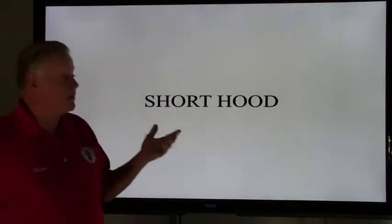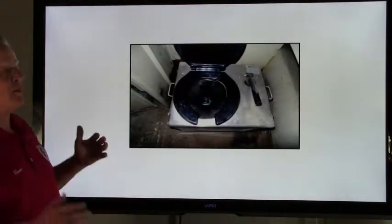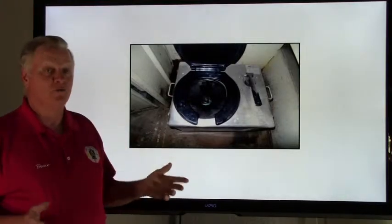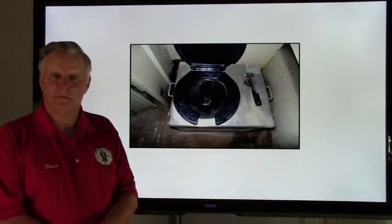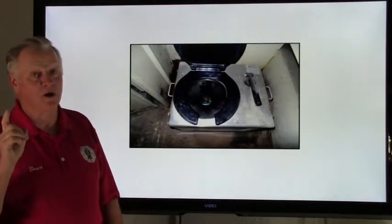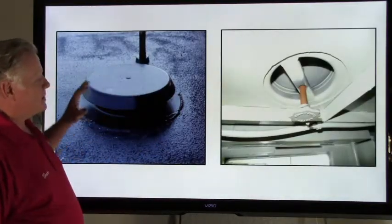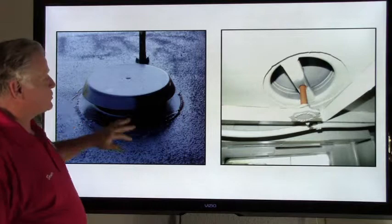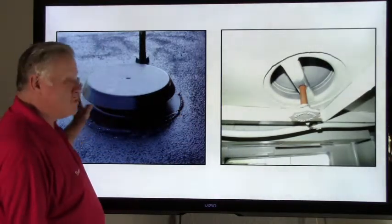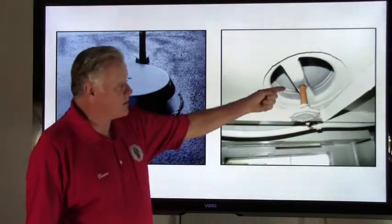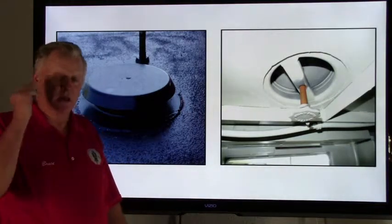Now we're going to talk about the short hood, otherwise known as the nose compartment. Most locomotives will have a toilet in there, though some railroads don't. Each locomotive will also have a nose compartment vent — usually in the ceiling as on this one, though some are mounted vertically on the engineer's side of the nose compartment.